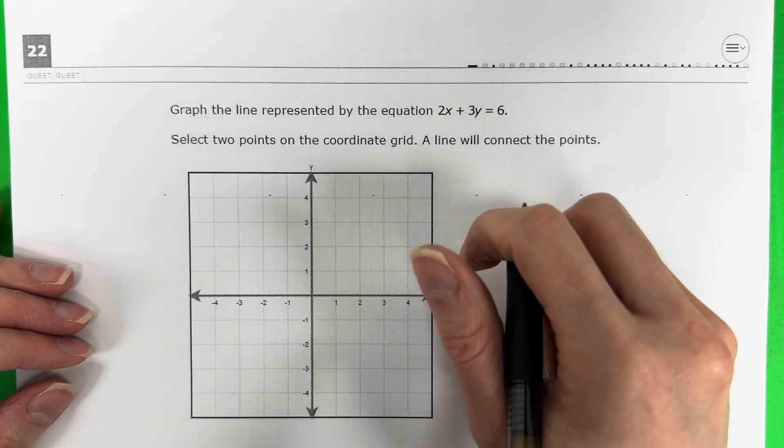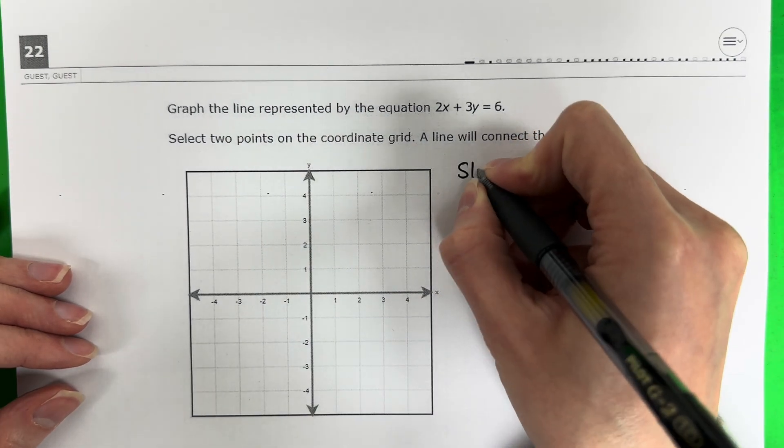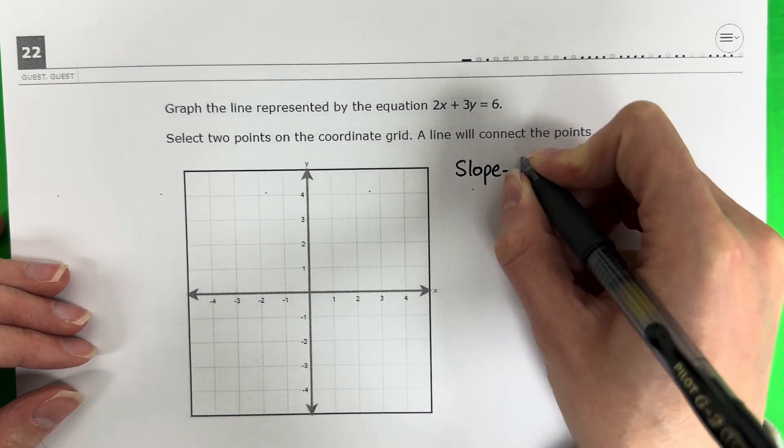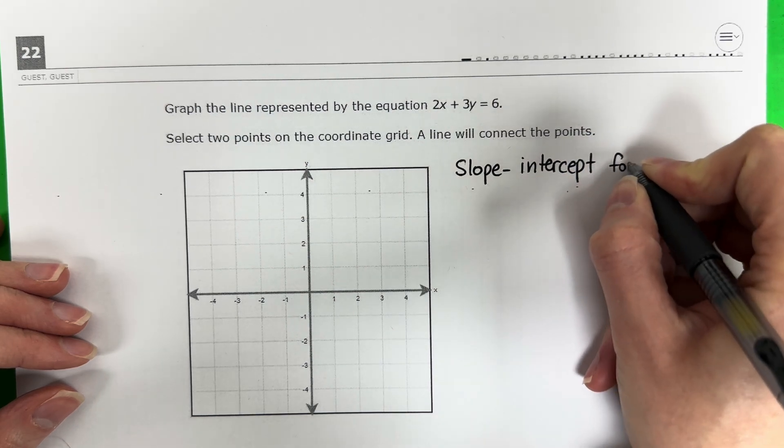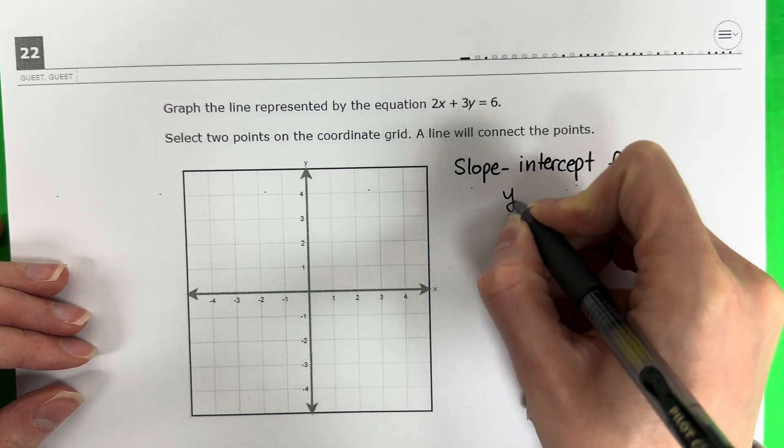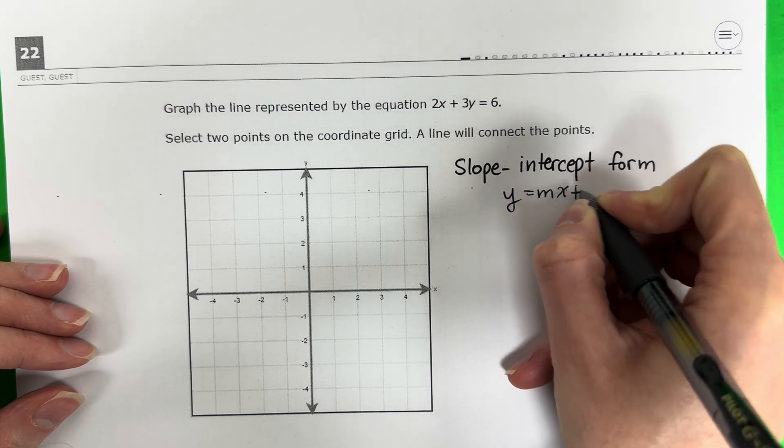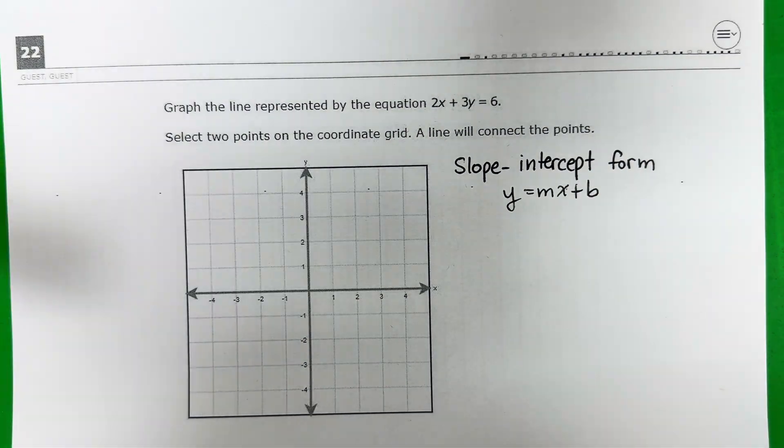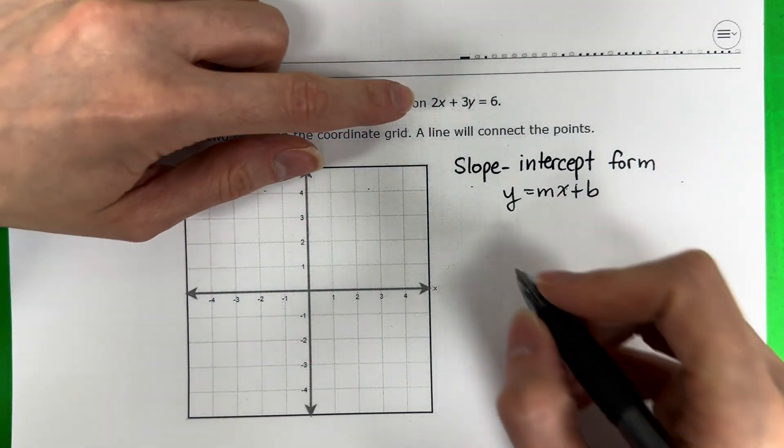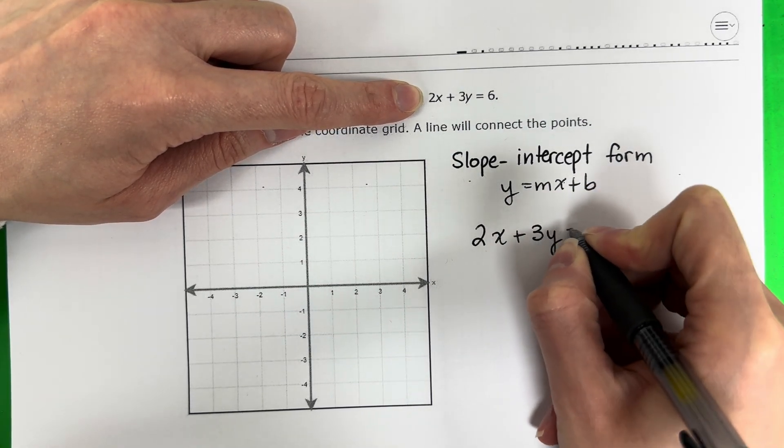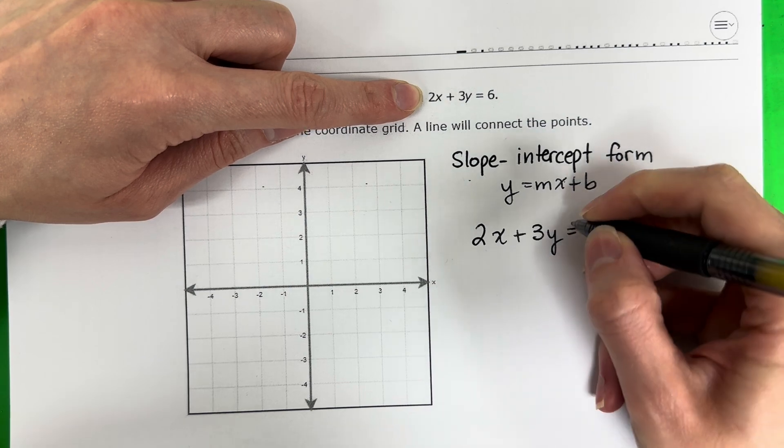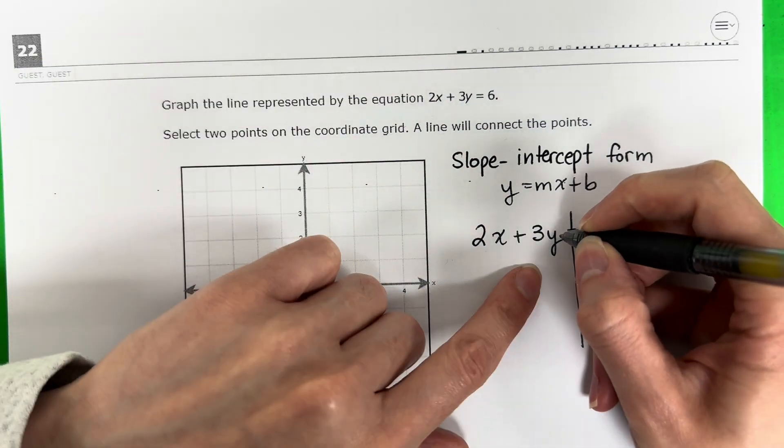To graph, you need to have it in slope-intercept form. So let me explain what slope-intercept form is. That is when it looks like y equals mx plus b. I basically want the y alone. So I'm going to copy this and fix it to isolate the y.